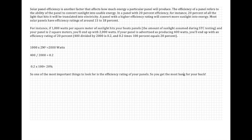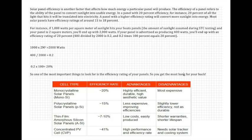Solar panel efficiency is another factor that affects how much energy a particular panel will produce. The efficiency of a panel refers to the ability of the panel to convert sunlight into usable energy. Here's an example. In a panel with 20% efficiency, for instance, 20% of all the light that hits it will be translated into energy. A panel with a higher efficiency rating will convert more sunlight into energy.